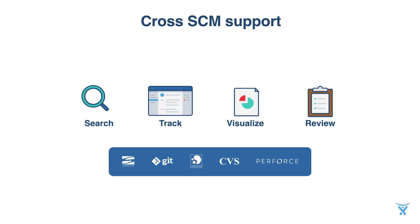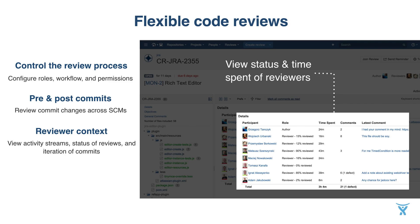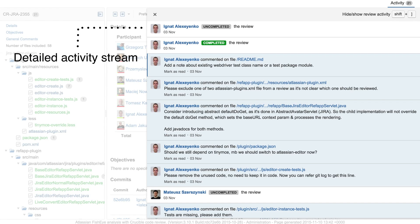Teams using different repo types can use the same tool to collaborate and track changes. Fisheye and Crucible are also perfect for the transition period of switching from older version control systems to Git. Crucible gives teams full control over the code review process, including roles, workflows, and permissions for users. Reviews can include pre- and post-commits, and you also have an option to upload additional files that need reviewing. Here is our activity stream — the one and only place you can see all activity related to a particular review.